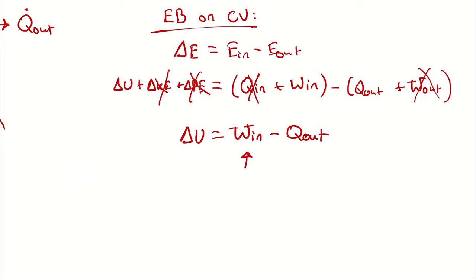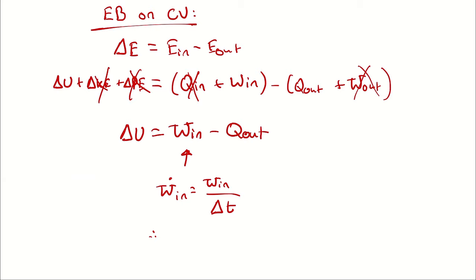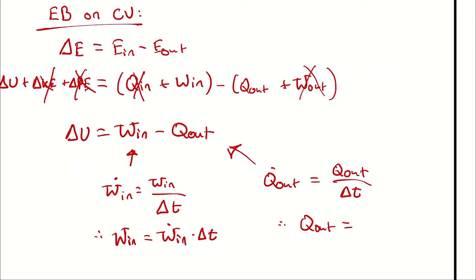Then I recognize that I don't have a magnitude of work in, I have a rate of work in. So I'll recognize that that rate of work in is going to be the work in occurring divided by duration because we are analyzing across the entire process. Therefore I can write work in as rate of work in times duration. Same goes for heat transfer. That rate of heat transfer rejected is the magnitude of heat transfer divided by duration. Therefore q out could be written as q dot out times duration.